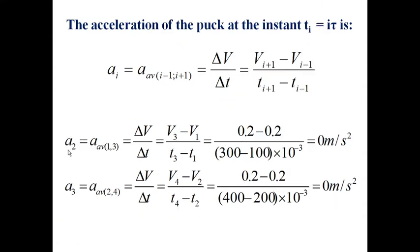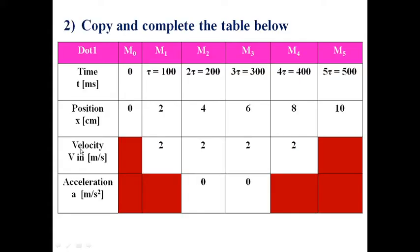Now acceleration. Acceleration at a given dot: V after minus V before over T after minus T before. In this case, the acceleration is 0. We defined acceleration as a change in velocity. The velocity is not changing, therefore the acceleration is 0. Now we get the following results.